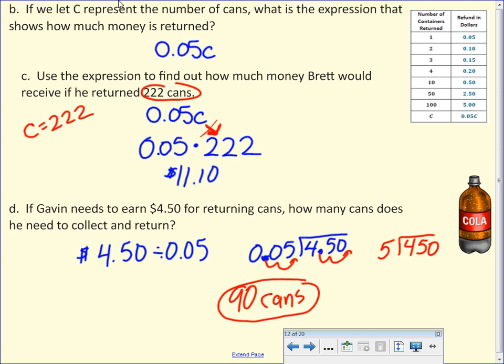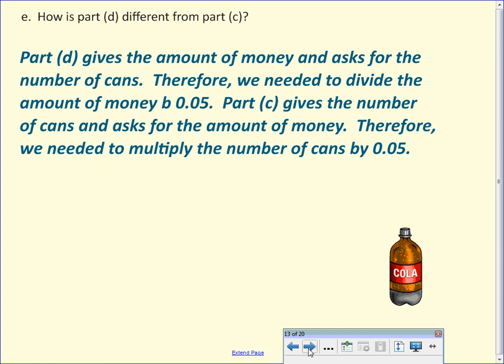So in part B, I'm sorry, in part C, we were looking for how much money. In part D, we were looking for how many cans. So that's the difference. Part D gets the amount of money and asks for the cans. So we needed to divide. Part C gets the number of cans but asks for the money. So now you need to multiply.